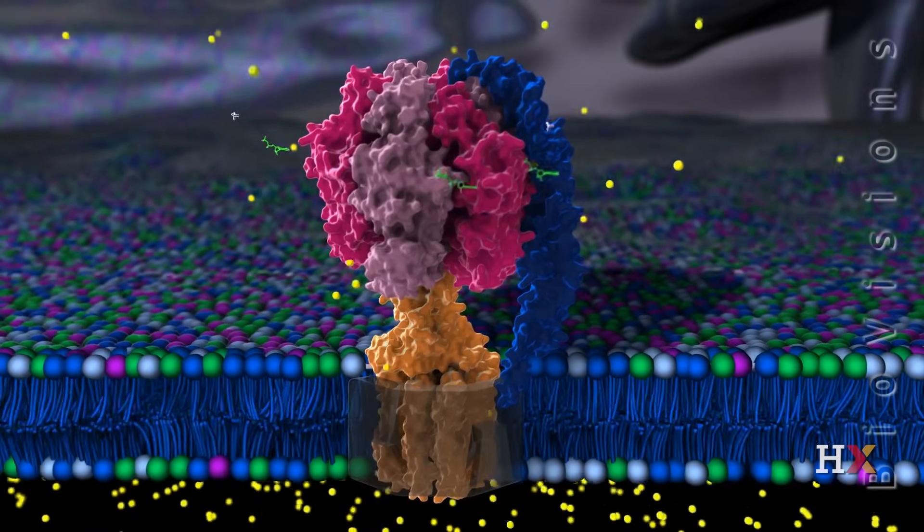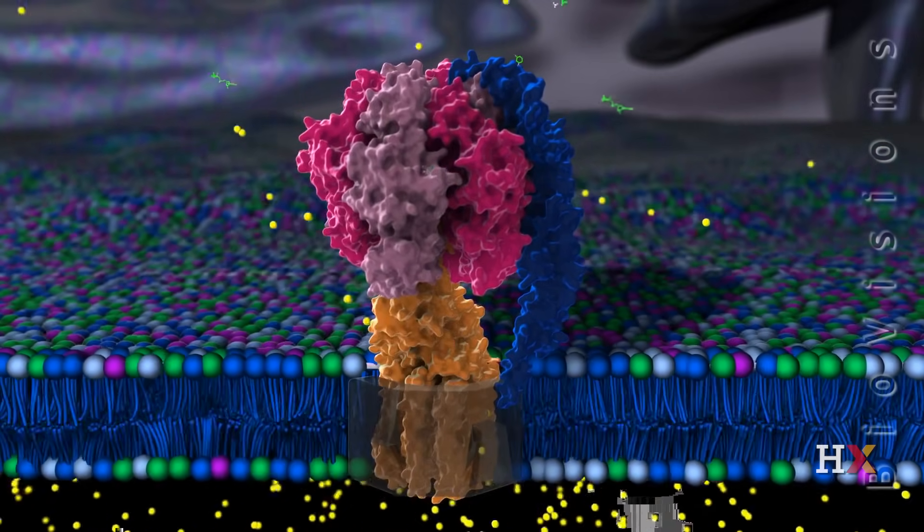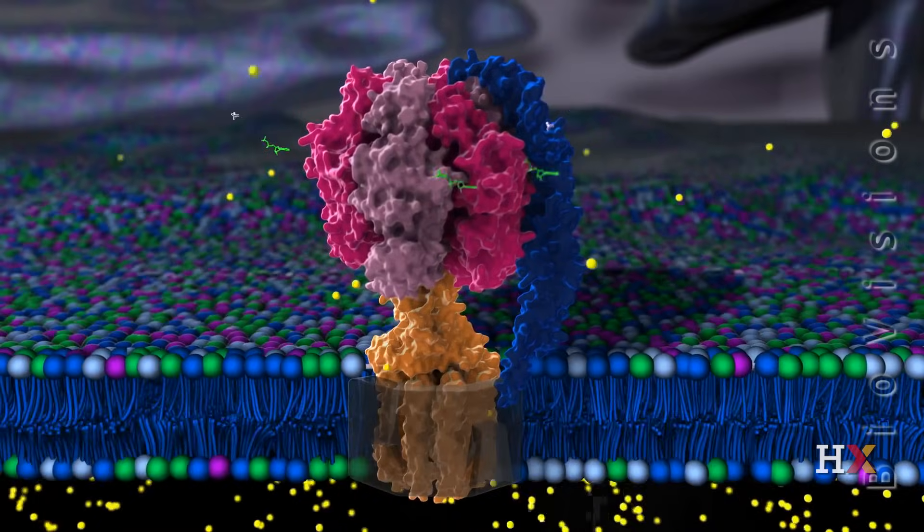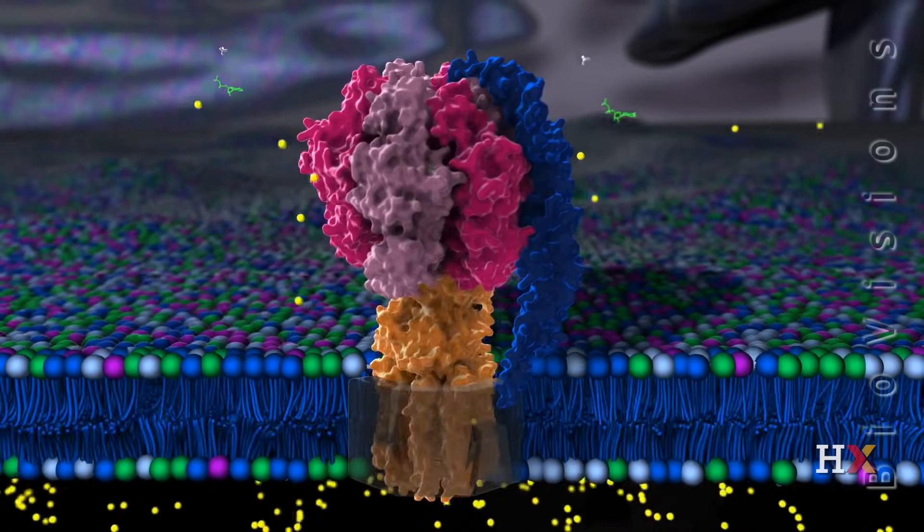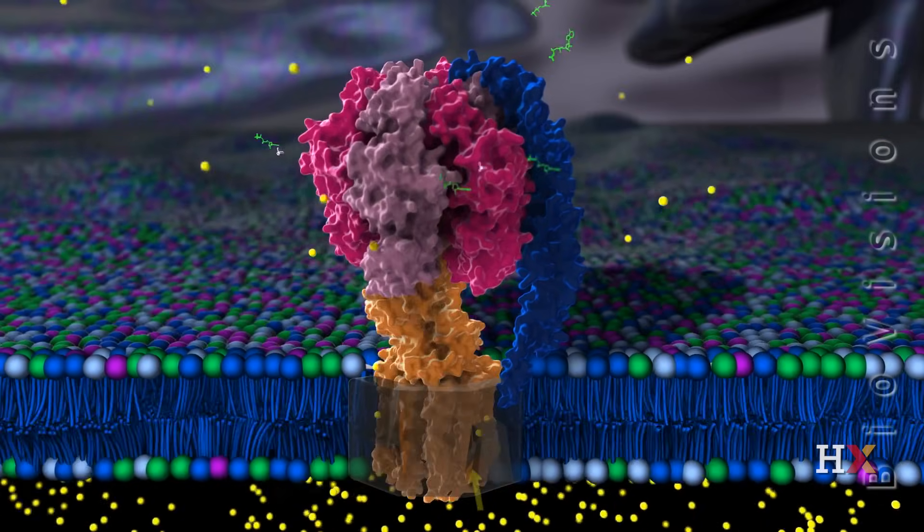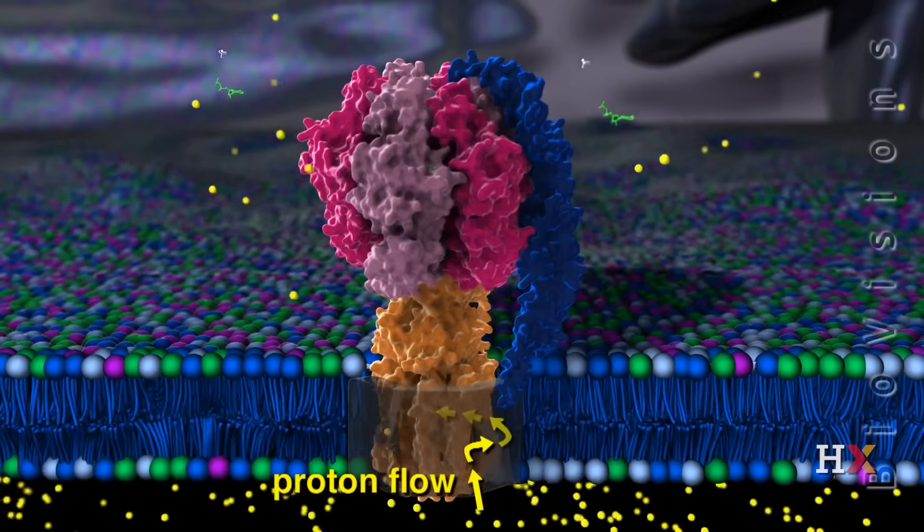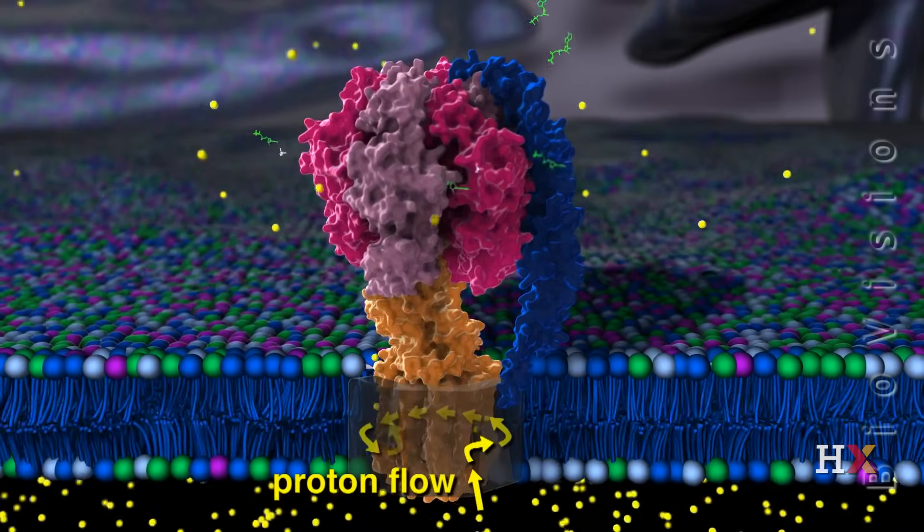Just as man-made power plants produce electrical energy by using the flow of wind, water, or steam to rotate a turbine, the synthase makes ATP by using proton flow from one side of the inner membrane to the other to rotate protein subunits.